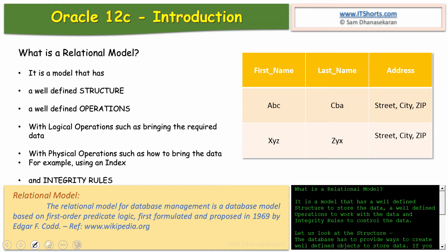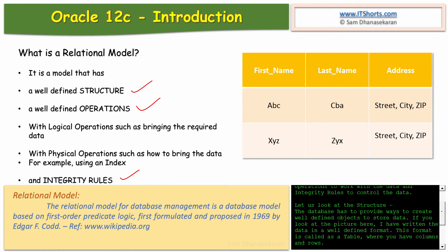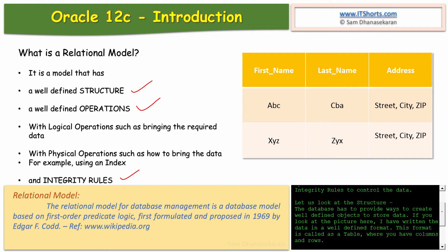What is a relational model? It's a model that has a well-defined structure to store the data, well-defined operations to work with the data, and integrity rules to control the data. The database has to provide ways to create well-defined objects to store data. If you look at this picture here, the data is written in a well-defined format — this format is called a table.